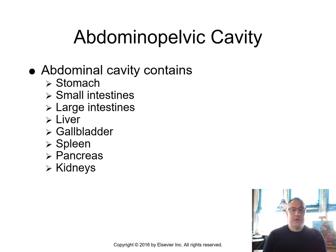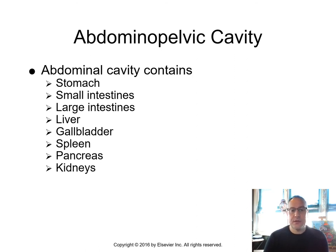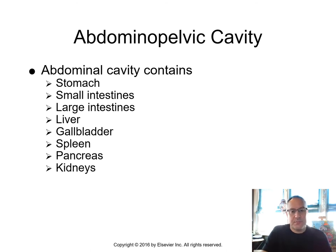The cavity contains a lot. We have the stomach, the small intestine — remember there are three parts: the duodenum, the jejunum, and the ileum, spelled with an E, not to be confused with ilium spelled with an I, which is part of the hip bone. We've got the large intestine, also called the colon, the liver, gallbladder, spleen, pancreas, and kidneys. Sometimes you hear the terminology 'small bowel' or 'large bowel' instead, and those terms are acceptable as well.